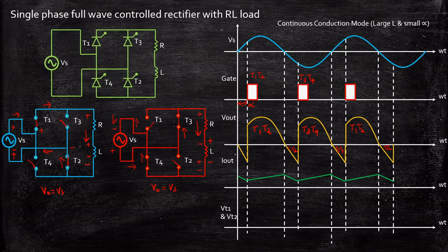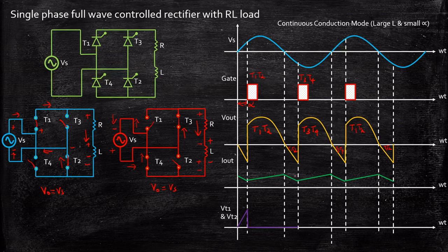Now let's take a look at the voltage across thyristors T1 and T2. I would suggest you try it for T3 and T4 because it is opposite to T1 and T2. When T1 and T2 are turned on, the voltage across them will go to zero because they are acting as short circuits. It remains at zero for as long as they continue to conduct. T1 and T2 stop conducting at a certain instant, and only then does the voltage across the thyristors follow the supply voltage — because the thyristors are now reverse biased, and a negative voltage is applied across T1 and T2.